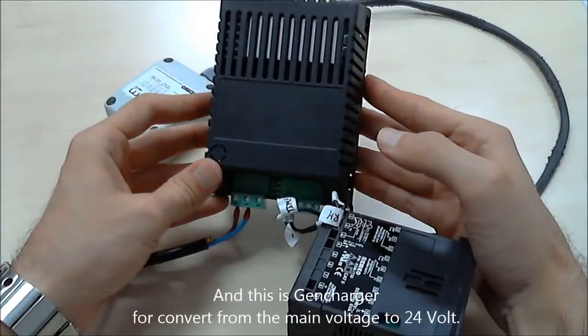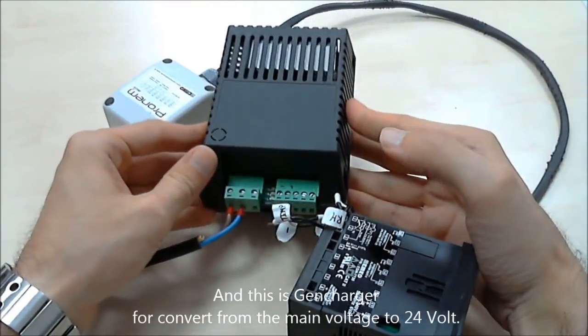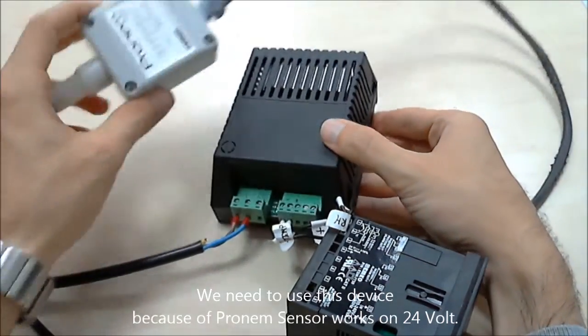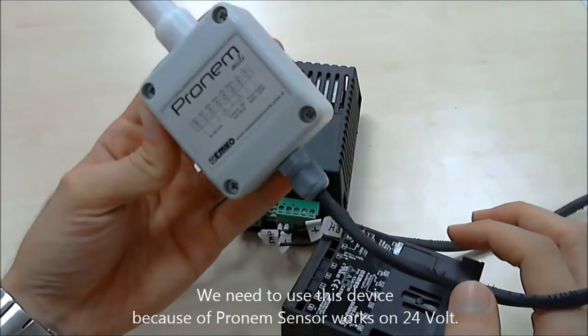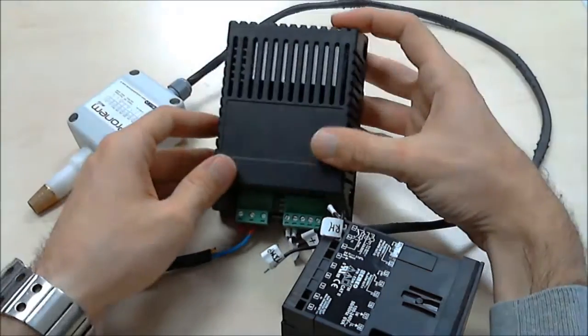And this is a converter from the main voltage to 24 Volt. We use this device because the PRONEM sensor works at 24 Volt, so we need this converter.